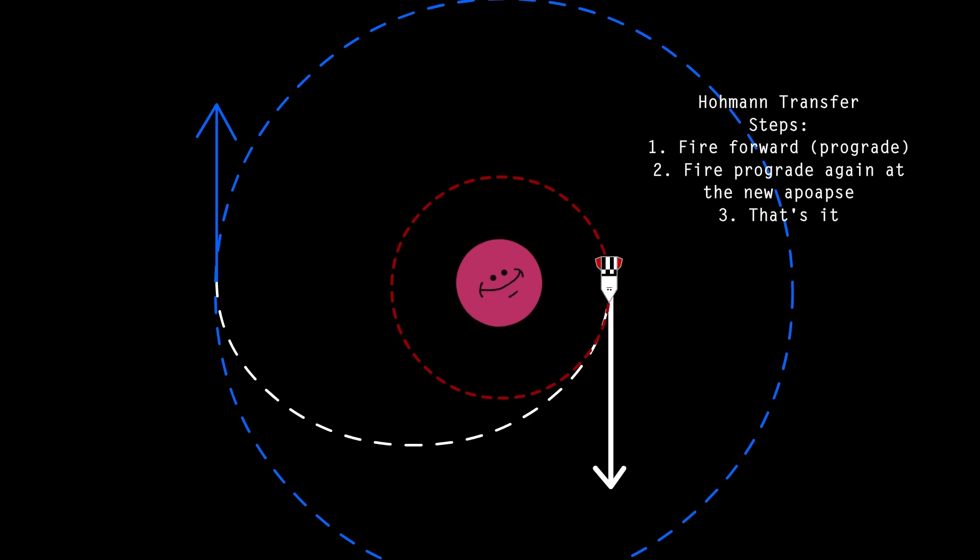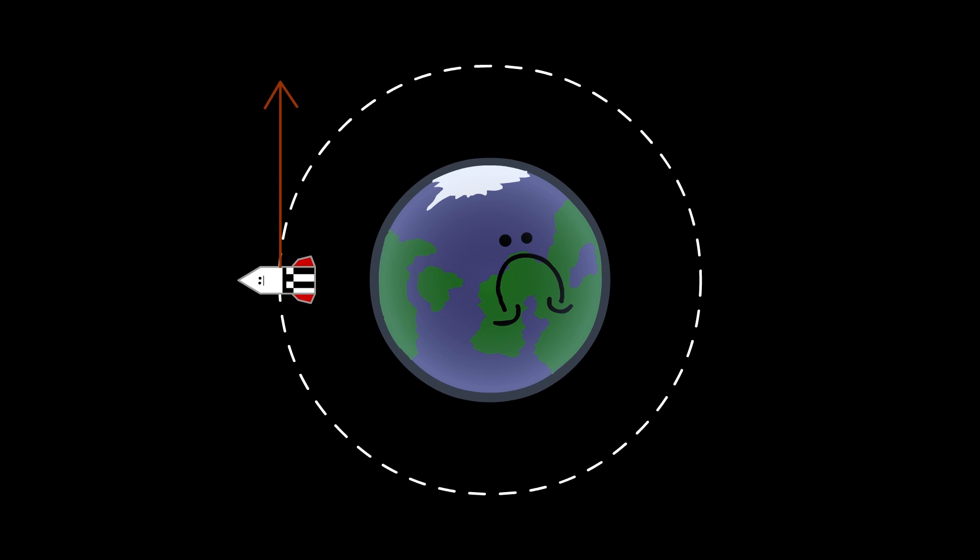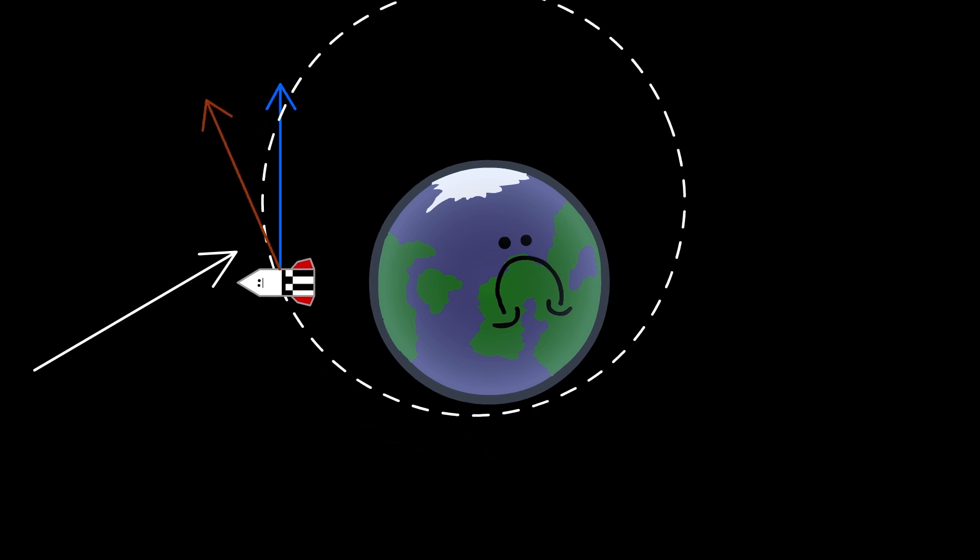Almost all transfer orbits are done this way or with gravitational assists. You can't effectively change an orbit by firing away from a body. This will change your radial. That thing. It's not effective or efficient, so don't do it.